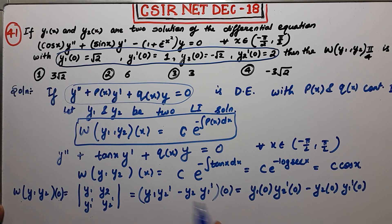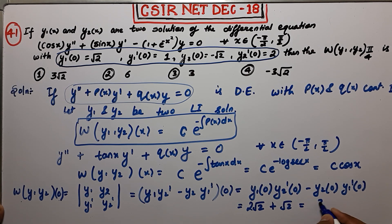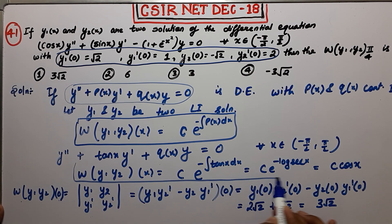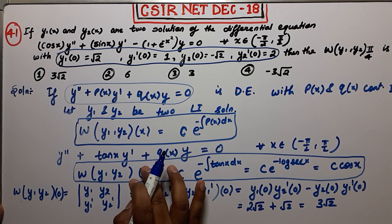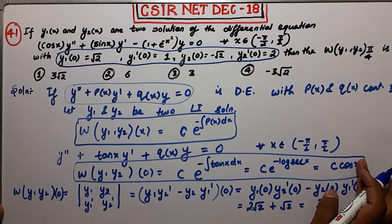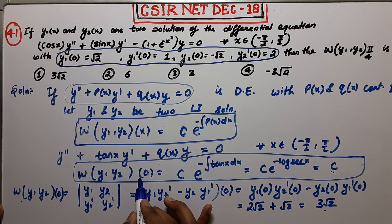We know y1(0) = √2 and y1'(0) = 1 from the given conditions. Using those four conditions: W(0) = y1(0)·y2'(0) - y2(0)·y1'(0) = √2·y2'(0) - y2(0)·1. This gives 2√2 + √2 = 3√2. So the Wronskian at zero is 3√2. Since W = C·cos(x), evaluating at x = 0: cos(0) = 1, so C = 3√2.